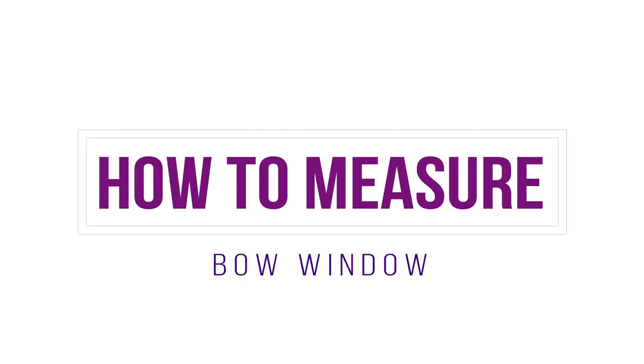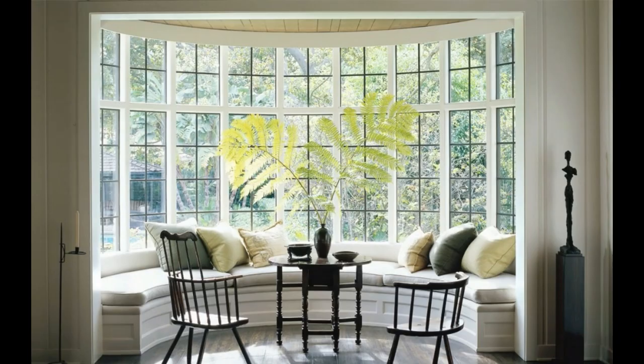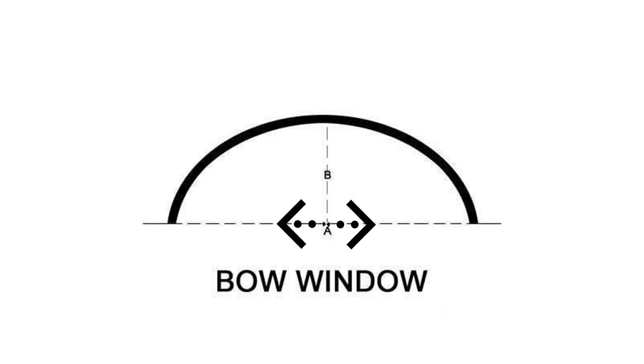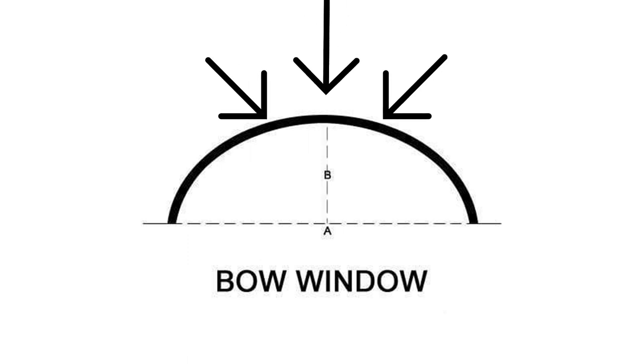Let's look at how to measure a bow window. Measuring a bow window is quite straightforward. Measure the overall width of the window A, including stackback allowance on the left and right where appropriate, and the depth B. Because of the angle, it's easy for the supplier to determine the length of the track needed with those two measurements.